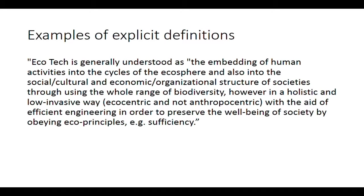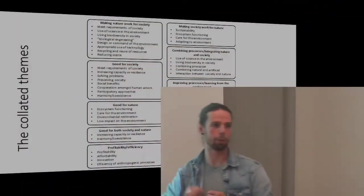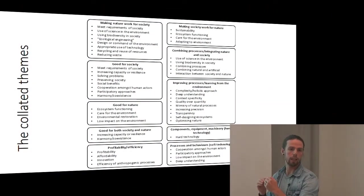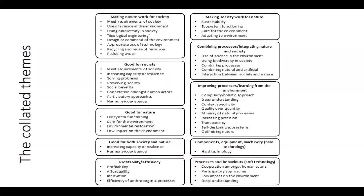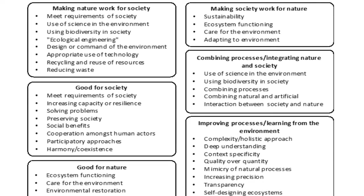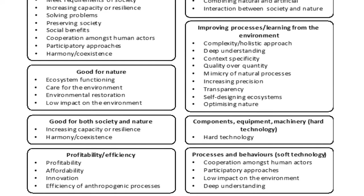We didn't find a single definition of ecotechnology explicit enough to capture all of the themes we identified. Each bullet point is a second-level theme: we extracted the text, summarized it, and then checked for overlap or duplication. We grouped themes into nine blocks that made sense: making nature work for society; making society work for nature; good for society; good for nature; good for both society and nature; profitability or efficiency; combining processes; integrating nature and society; improving processes or learning from the environment; components, equipment or machinery; and processes and behaviours.